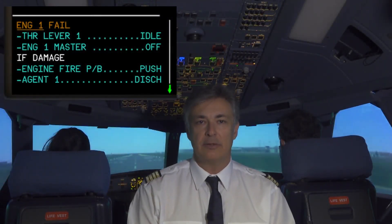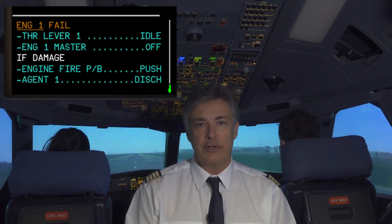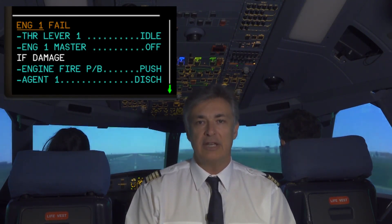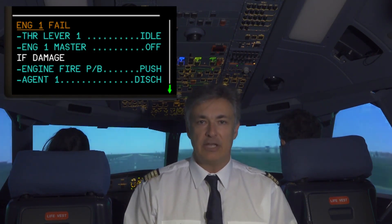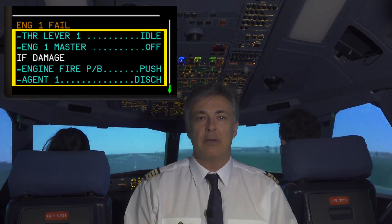The engine should be considered as damaged if the failure was accompanied by a loud noise, significant increase in aircraft vibrations, repeated or uncontrolled engine stalls, or associated abnormal engine indications. In order to effectively secure the engine and prevent further damage, the respective fire push buttons must be pushed and one agent discharged. As soon as the failed engine is secured and the aircraft reaches the engine-out acceleration altitude, a level off should be performed to accelerate and retract the slats and flaps on schedule.